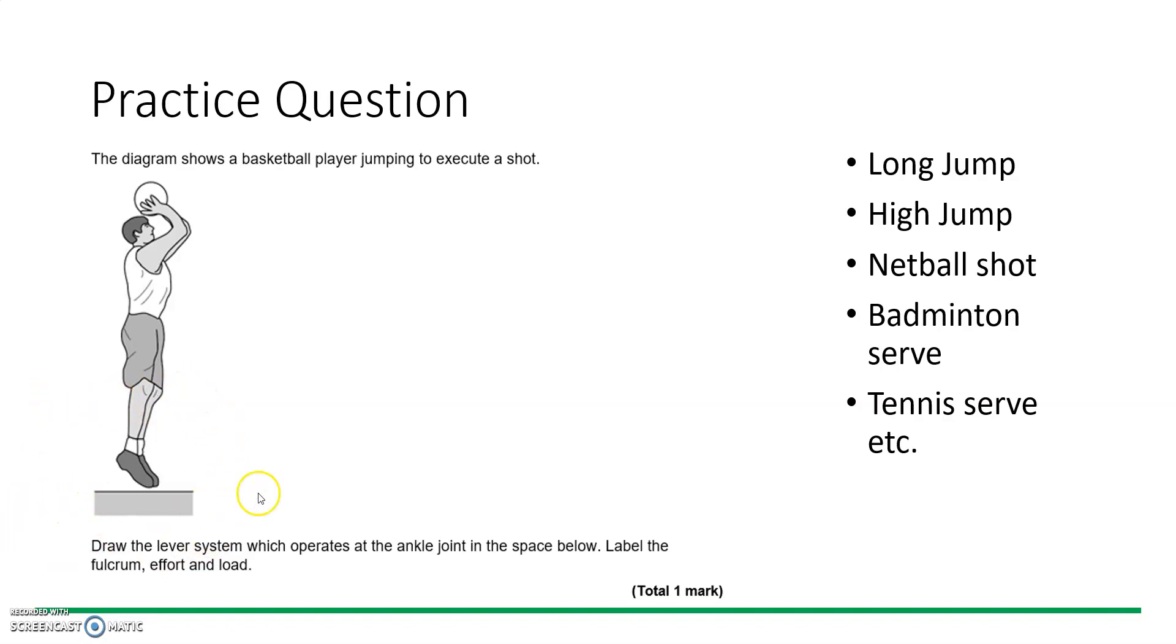What I try to impress on students is to highlight and draw a box around the ankle, because then you forget about the rest of the image. The rest of the image there is to try and put off students. They see the question says draw the lever system which operates at the ankle joint. Some students are very excited and don't remember it's the ankle joint and they might look at the elbow instead.